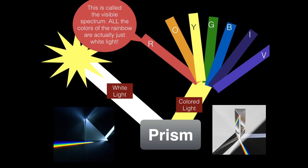This is called the visible spectrum. All the colors of the rainbow were actually just white light. See? The white light from the sun goes to the prism and then reflects back as colored light. It only comes up as the colors of the rainbow, except that when they mix, you can get into the colors. It says so in a couple more slides.